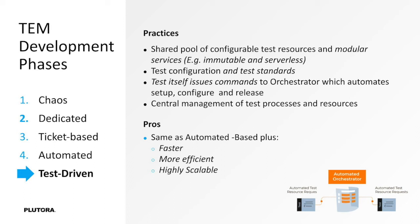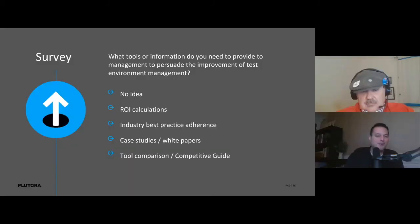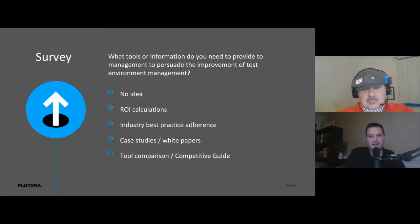We have another survey about what tools or information you need to provide to management to persuade improvement of test environment management. The answer choices are: no idea, ROI calculations would help, industry best practices, case studies, or tool comparison and competitive guides. How do you tell management you want to do better and get them to enable spending some money on improving this, so you can ultimately improve quality, reliability, and predictability of software delivery?